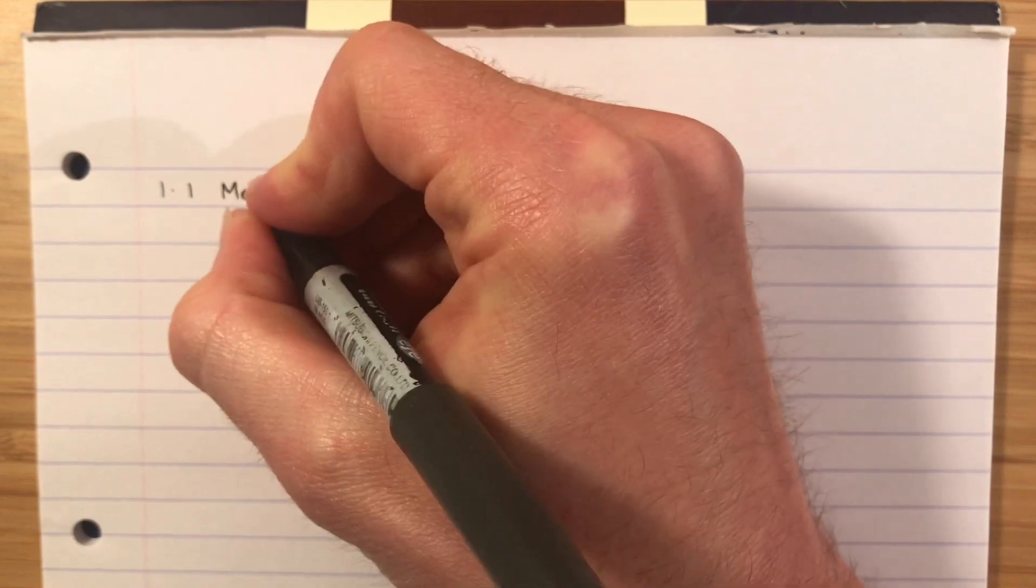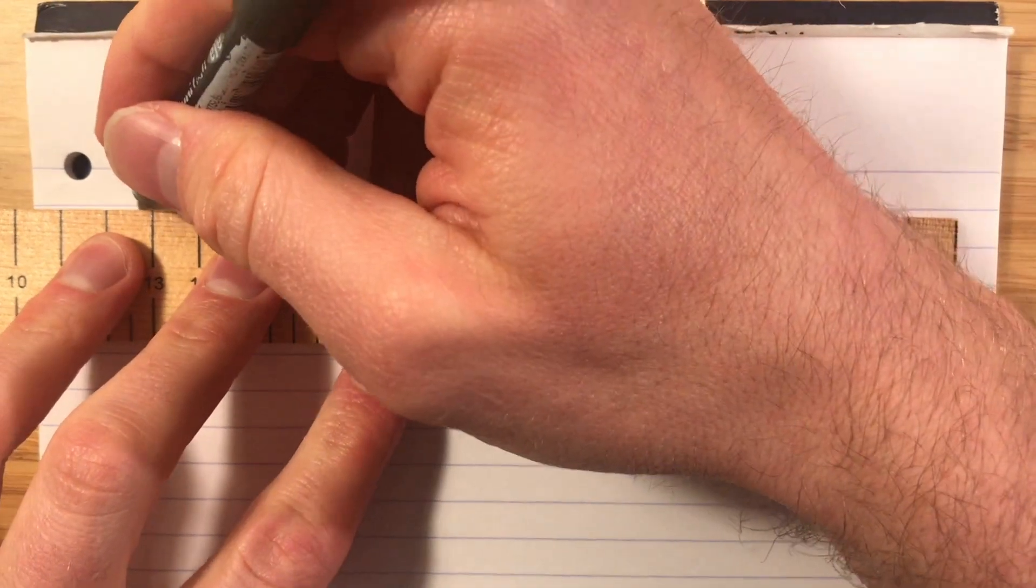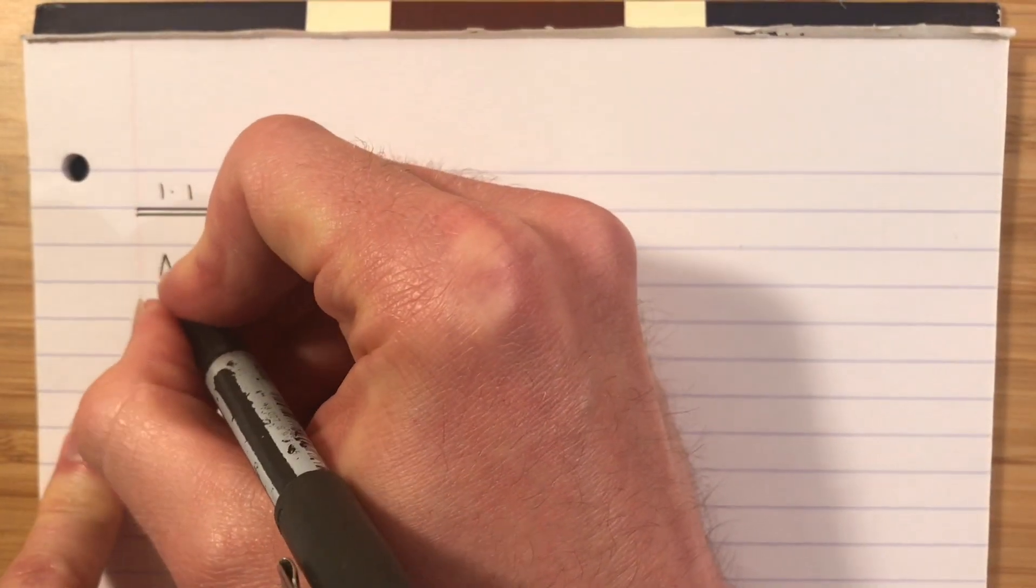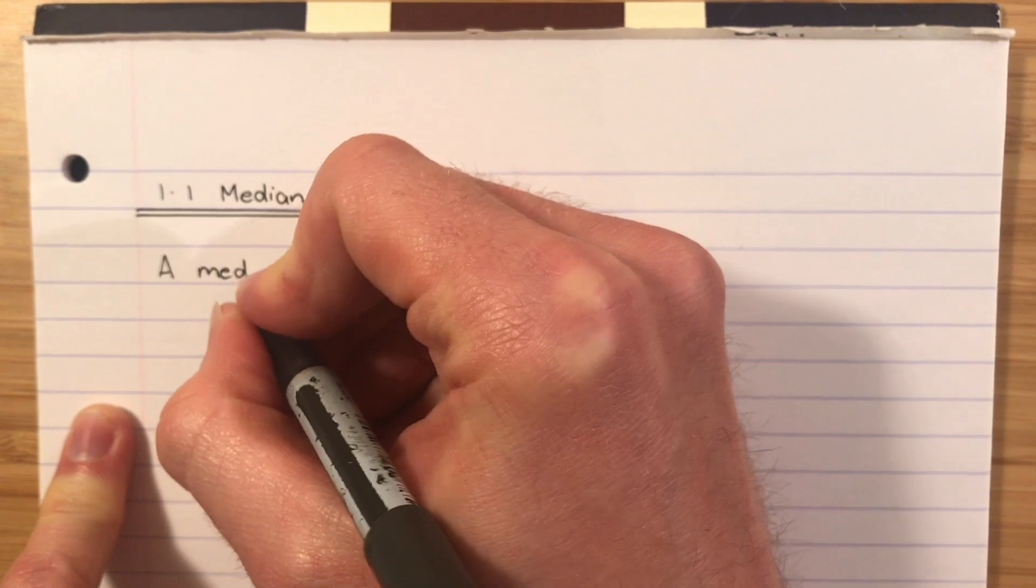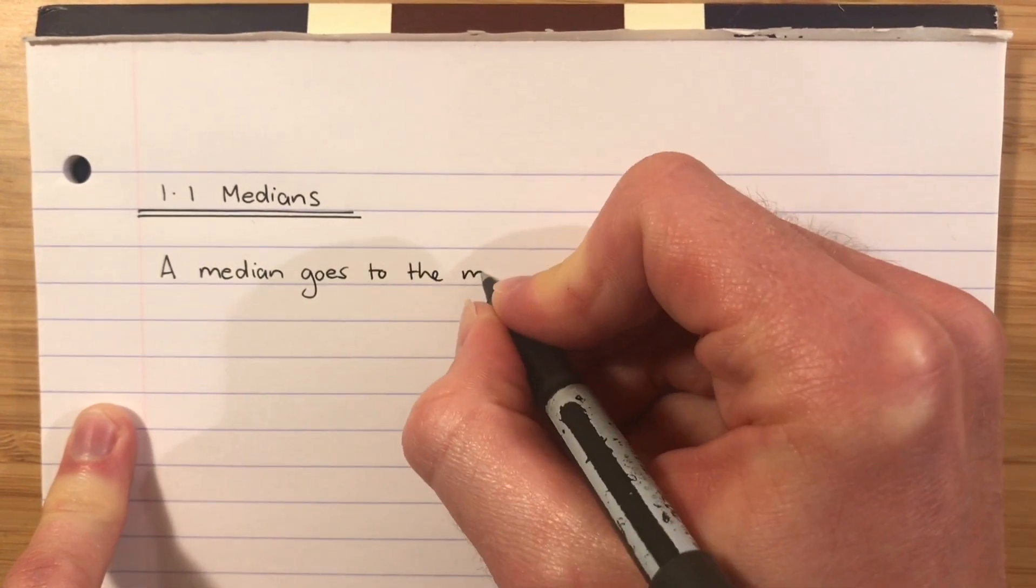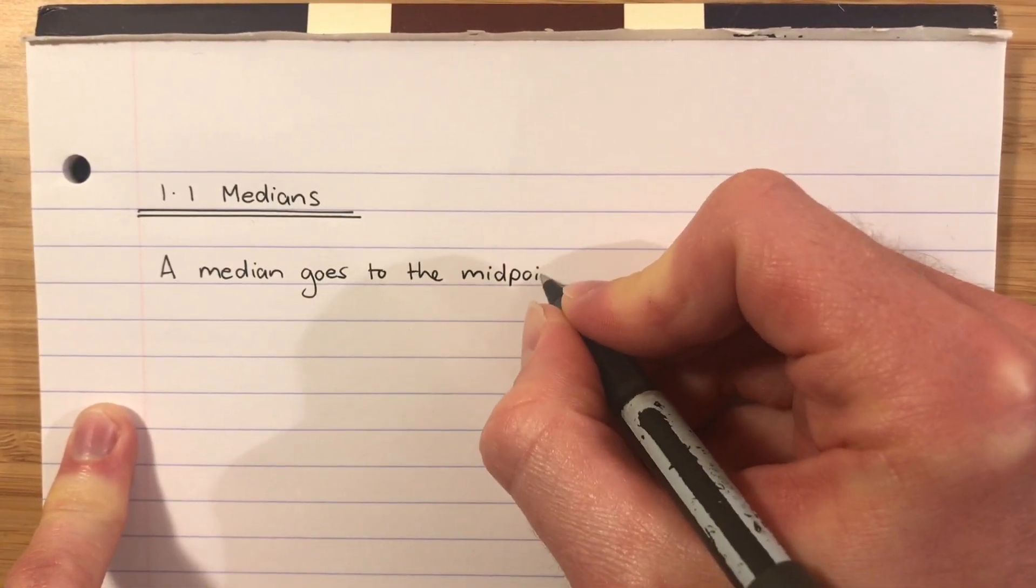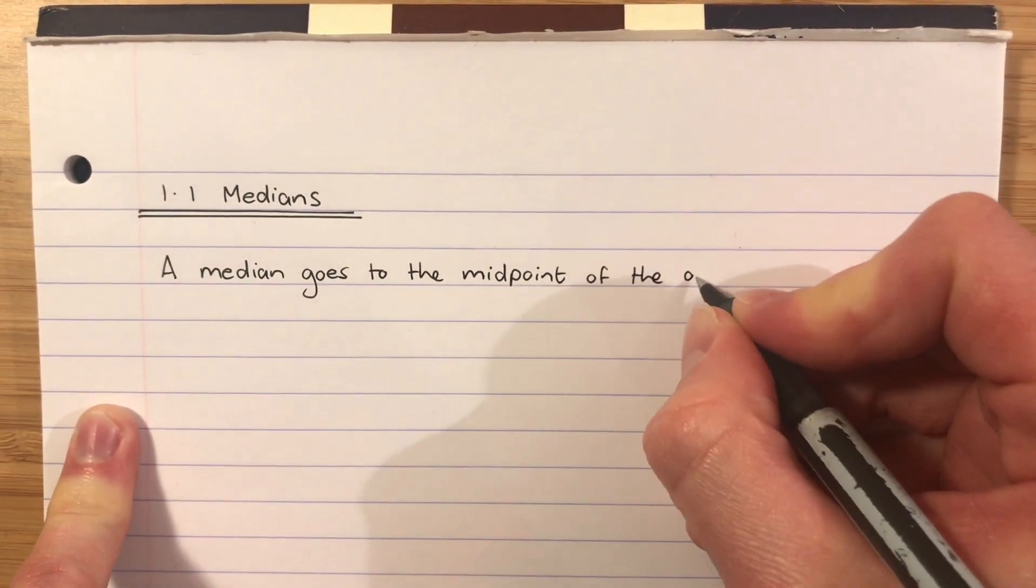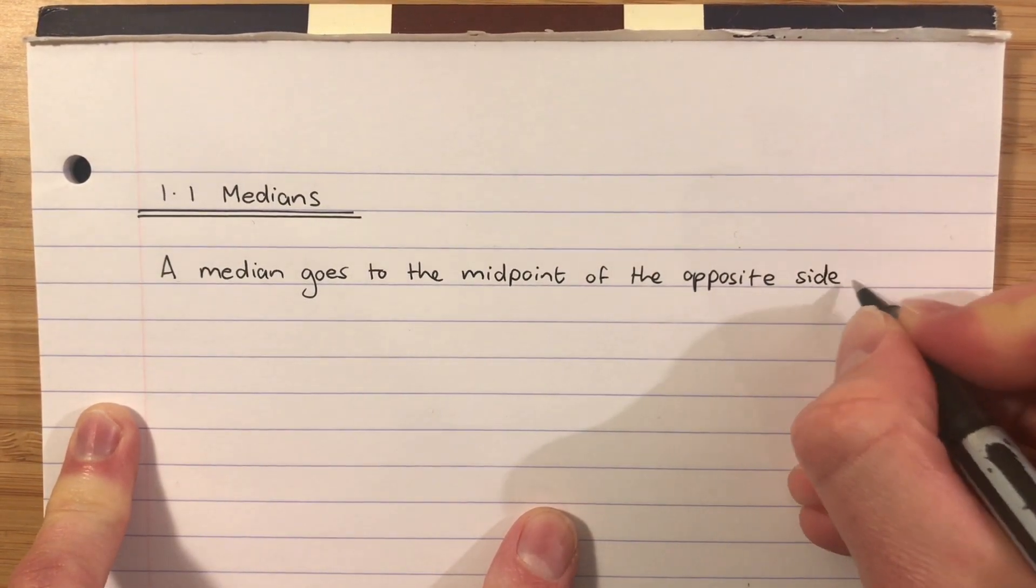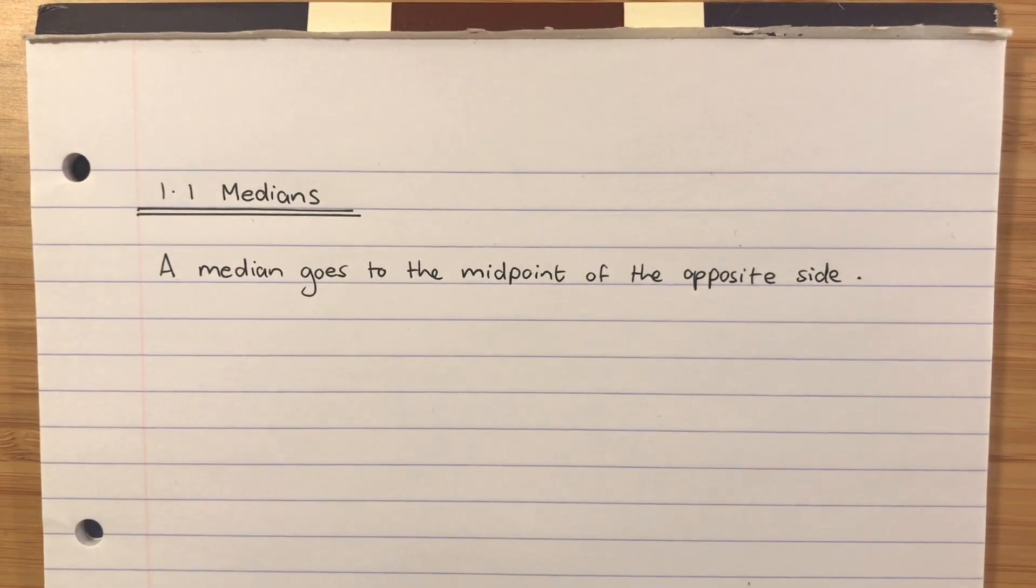Let's take a subheading of 1.1 Medians. The thing you really need to know about a median is a median goes to the midpoint of the opposite side. When you see the word median, that's what you should think. A median goes to the midpoint of the opposite side. Say that out loud a couple of times because you have to get that in there, you have to be thinking that.